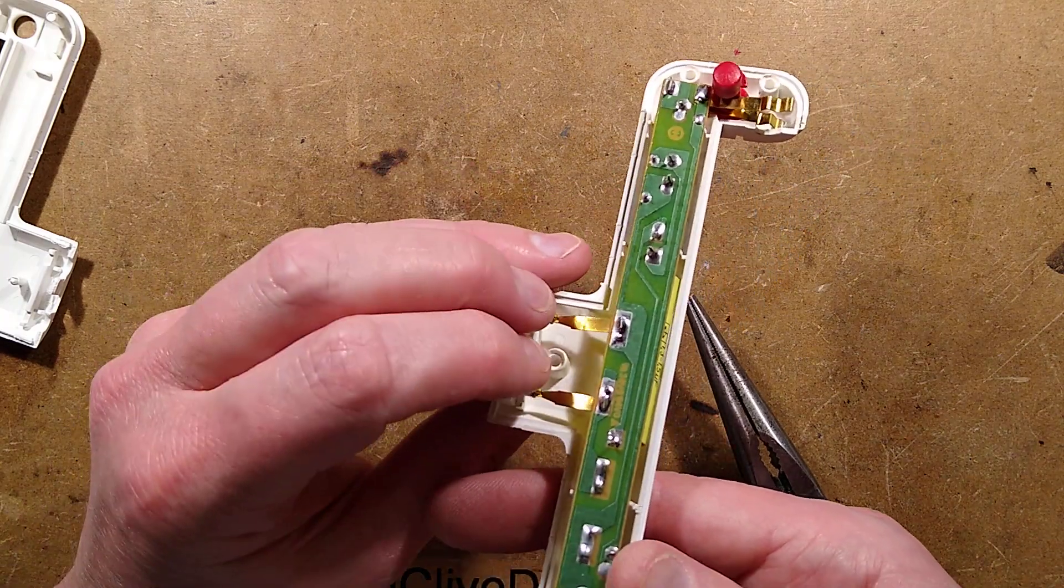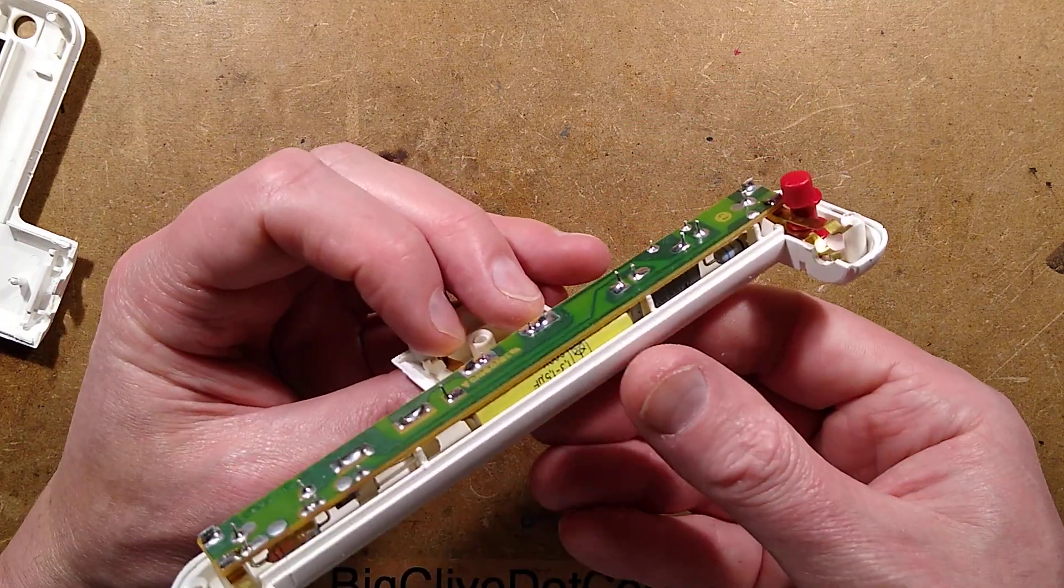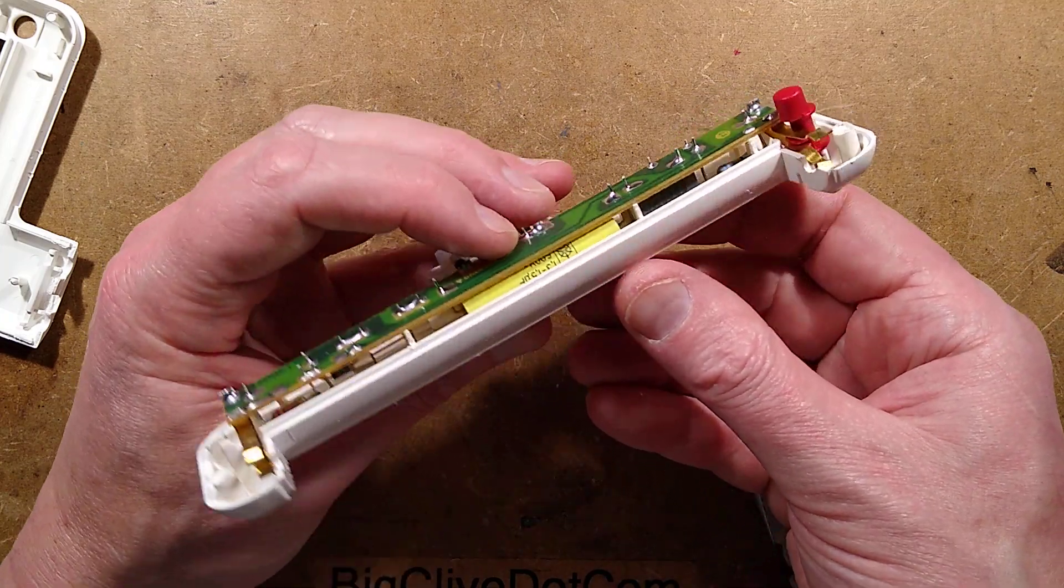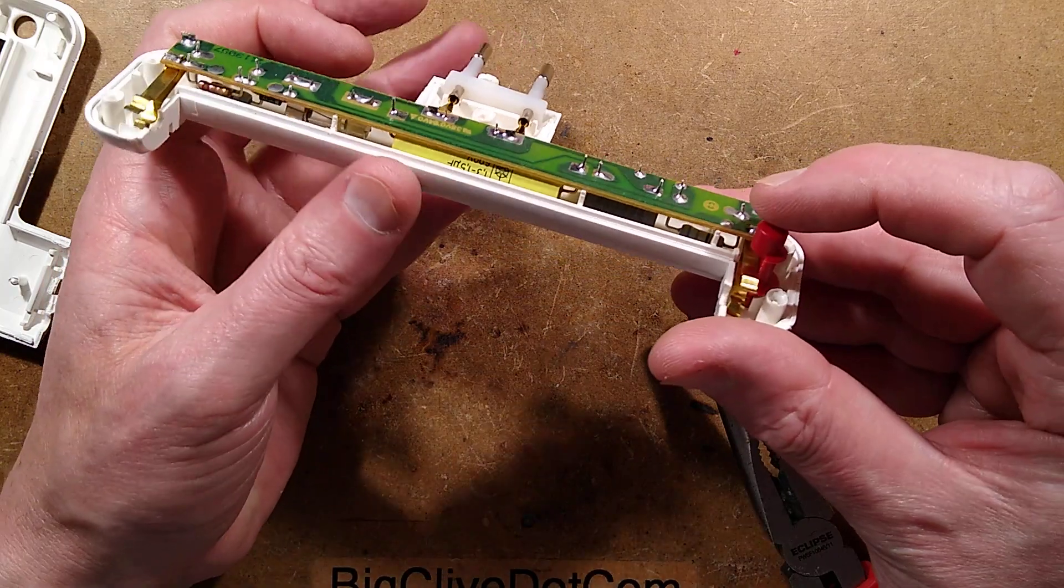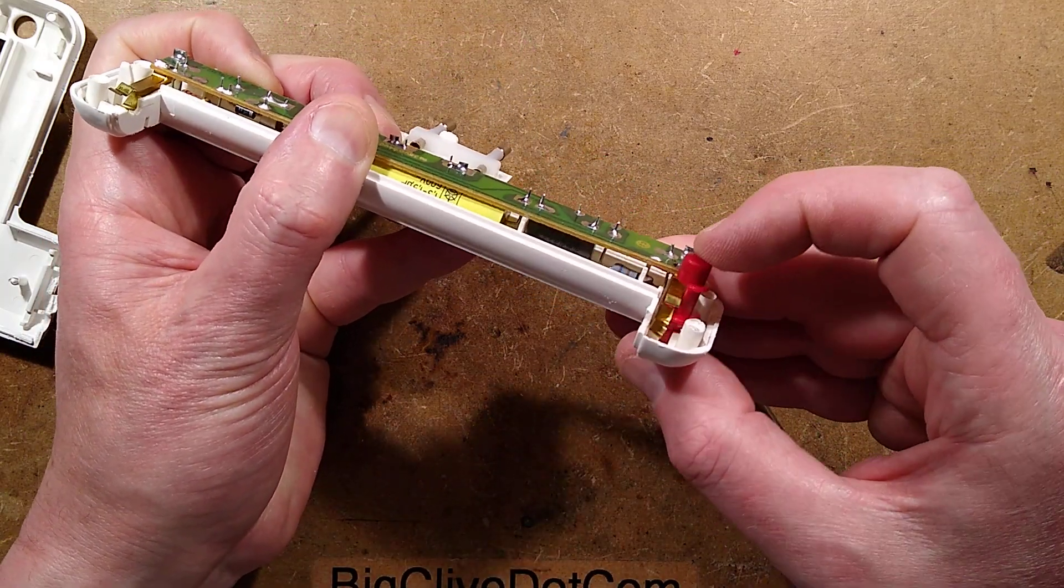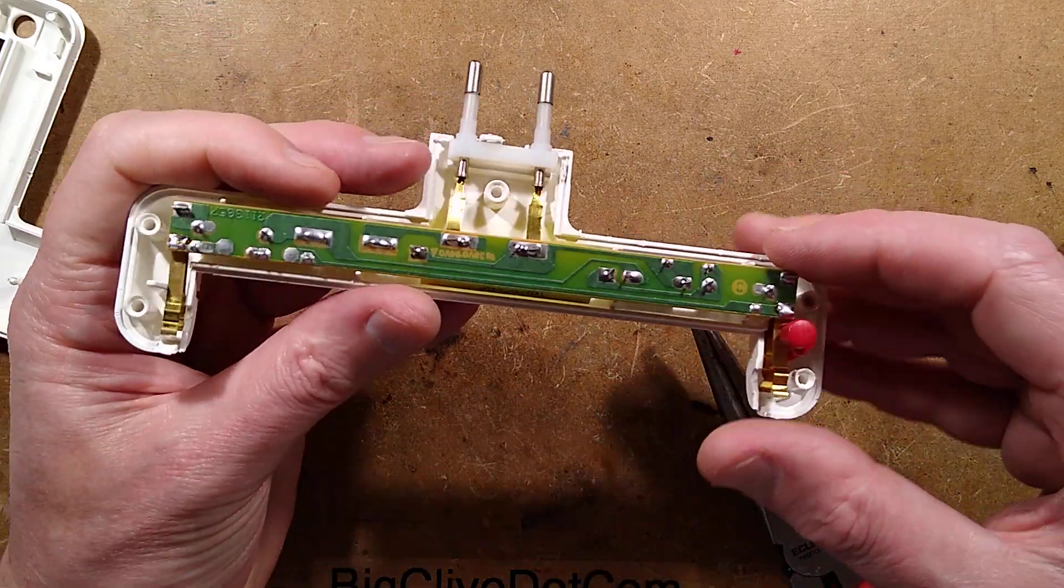The switch—I should be careful here because there's a big capacitor. I can already see that: 1.3 to 1.5 microfarad. This switch here, it's just pushing one of the lamp contacts backwards and forwards. That's very strange.